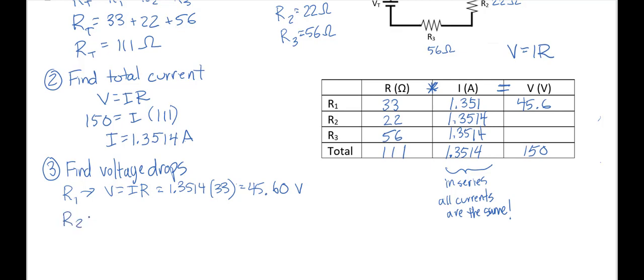And then R2, we're going to use the same V equals IR. So it's the same 1.3514 times 22 ohms. And that's going to be 29.7308. So we're going to round just to two decimal places. Put that in the table. Notice that the smaller resistor gets less voltage. It's actually proportional to the resistance value. So if a resistor is twice as big, it's going to get twice the voltage. And that will come out of the math if you just follow the kind of steps that I'm talking about. But it's good to notice that because that might save you some time or help with your understanding.